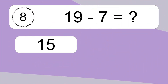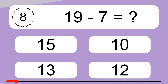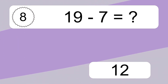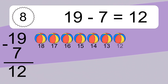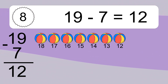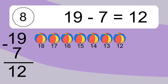19 minus 7 equals what? 19 minus 7 equals 12. Let's count it: 18, 17, 16, 15, 14, 13, 12.